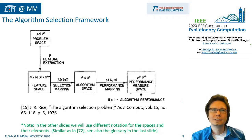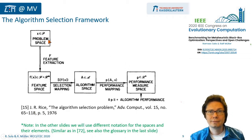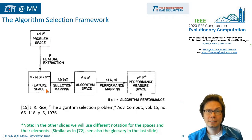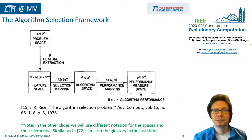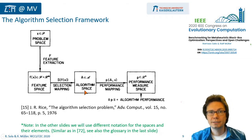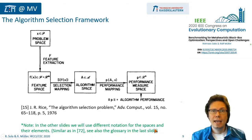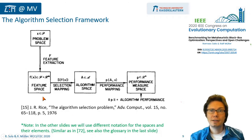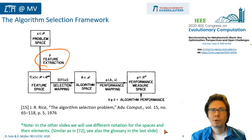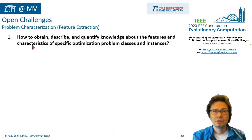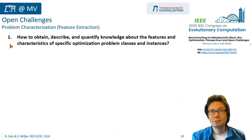One key point of this algorithm selection framework is that it splits up the problem into a problem space P with instances x, a feature space F which is in general multidimensional, an algorithm space, and a performance measure space. It relates these spaces by feature extraction and mappings. One important question or challenge is related to feature extraction: how to characterize, describe, and categorize the properties of optimization problems and problem classes?